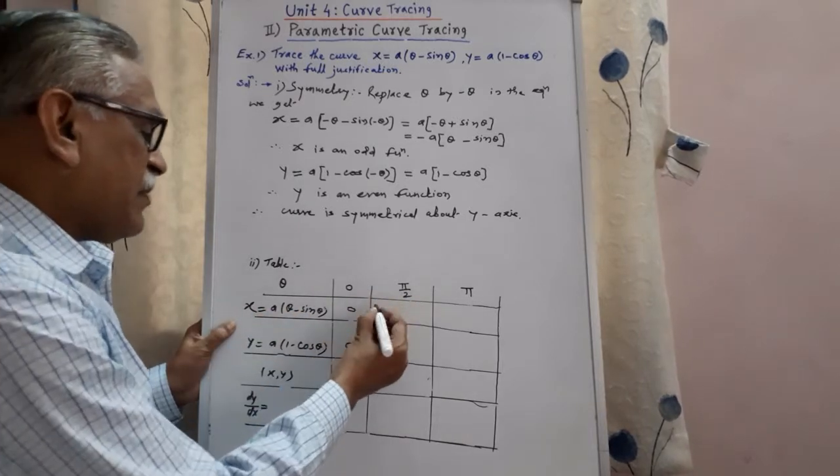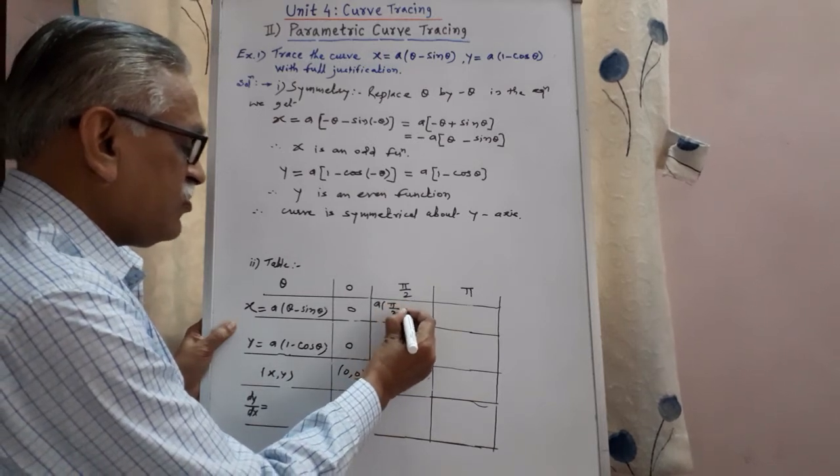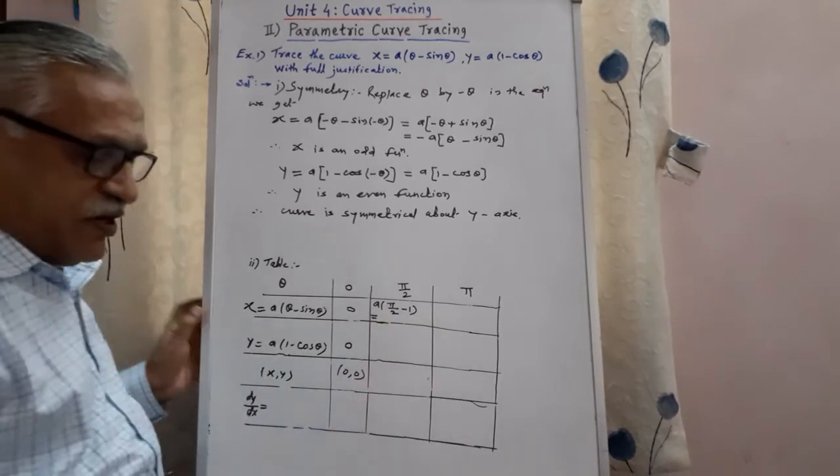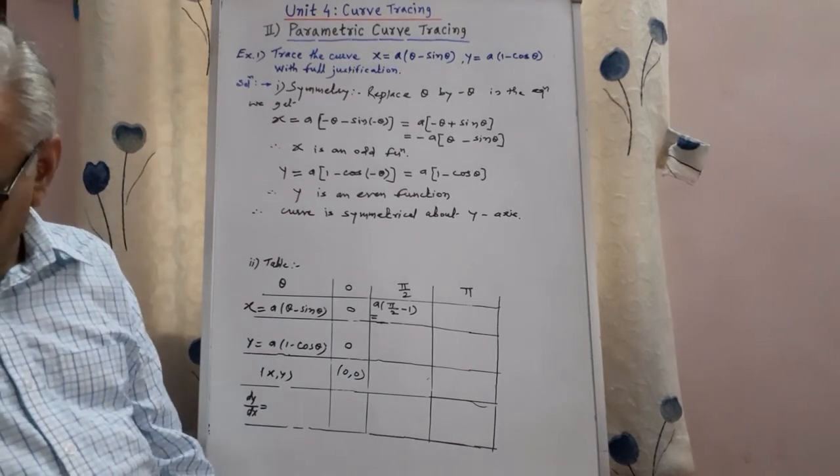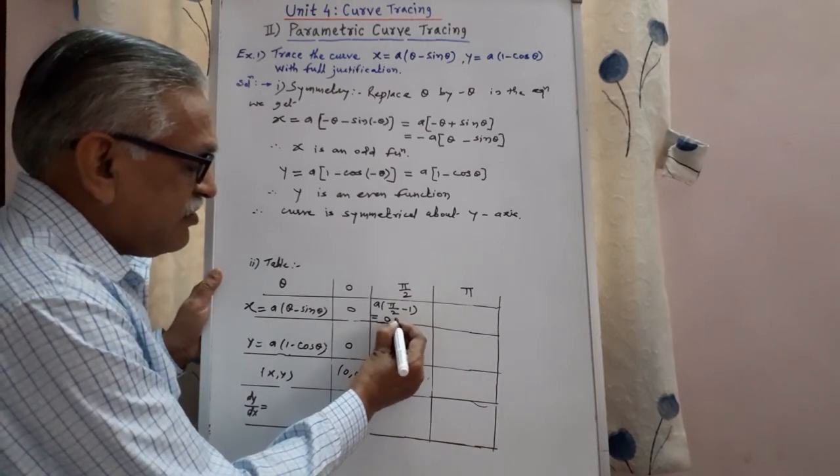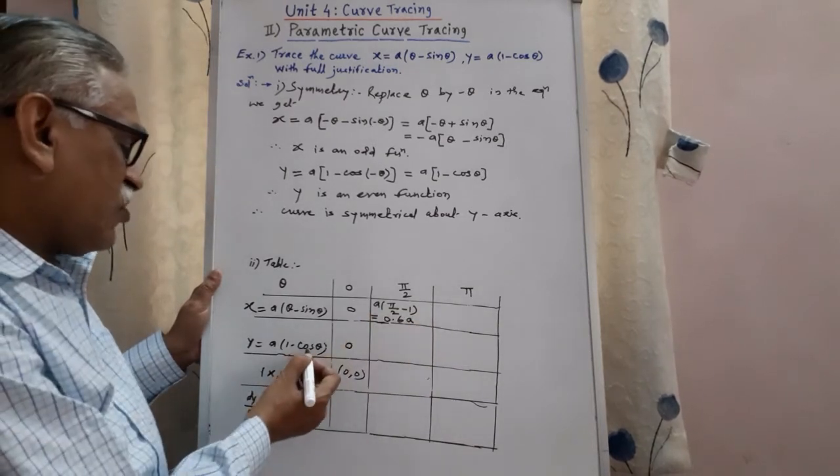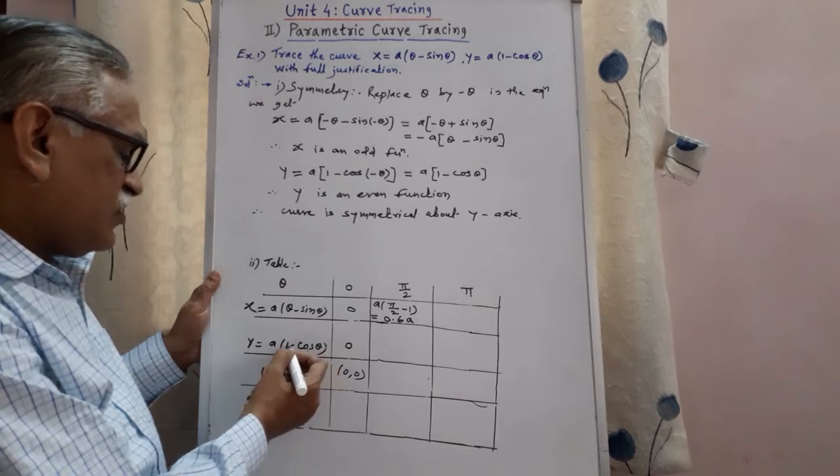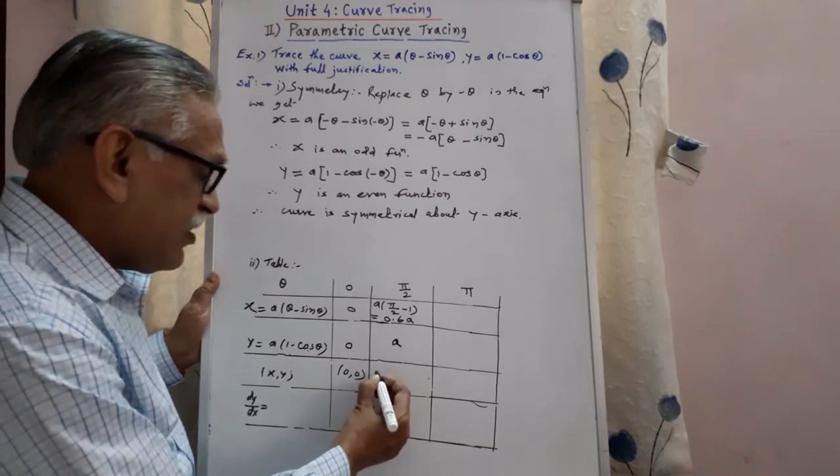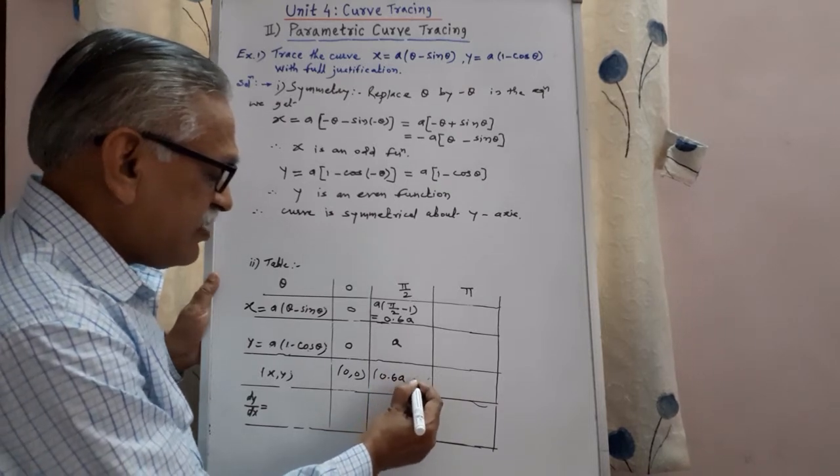Then when theta is pi by 2, it is a pi by 2 minus 1, and if we substitute the value of pi as 3.14 by 2 minus 1, it is coming as approximately 0.6a. Then cos of pi by 2, cos pi by 2 is 0, 1 minus 0 is 1 into a, therefore that point is a. Point which we have to plot is x coordinate is 0.6a and coordinate y is a.